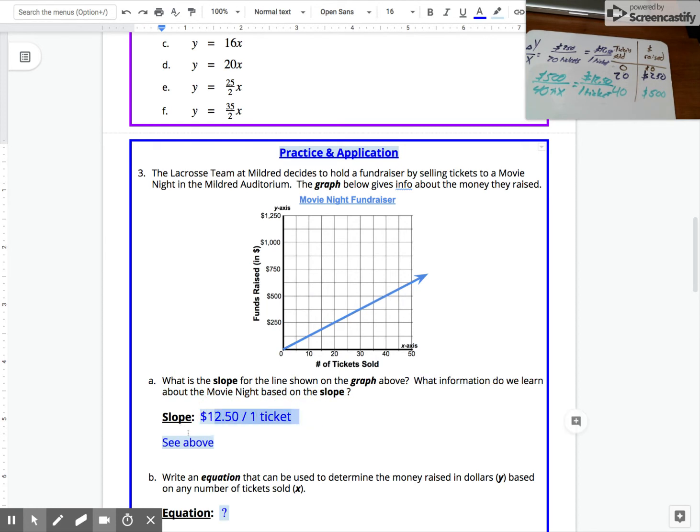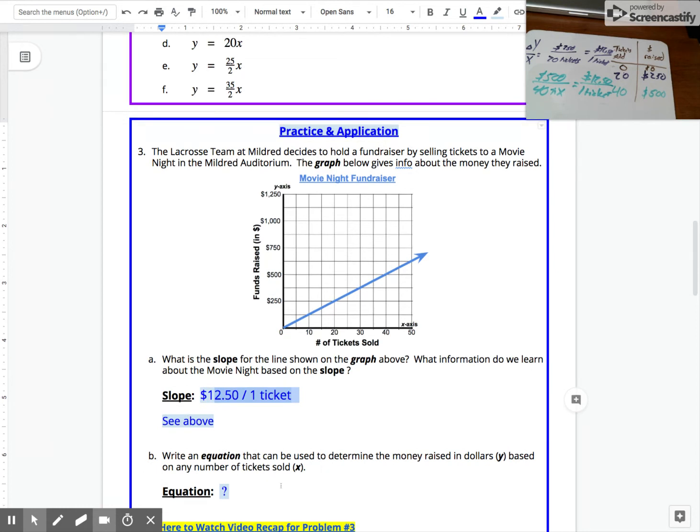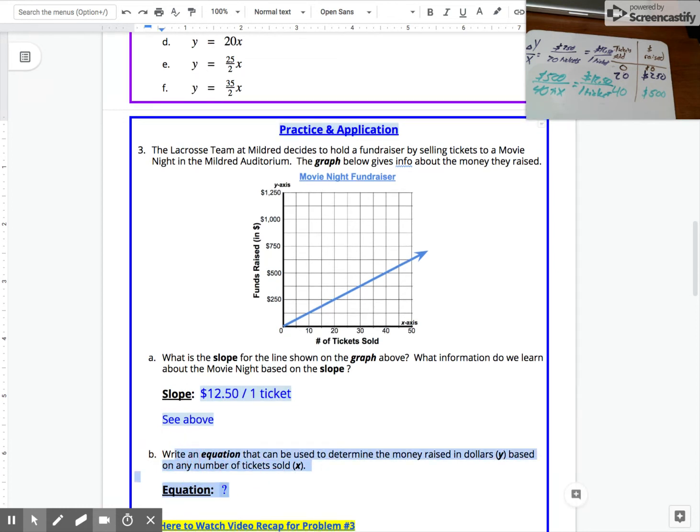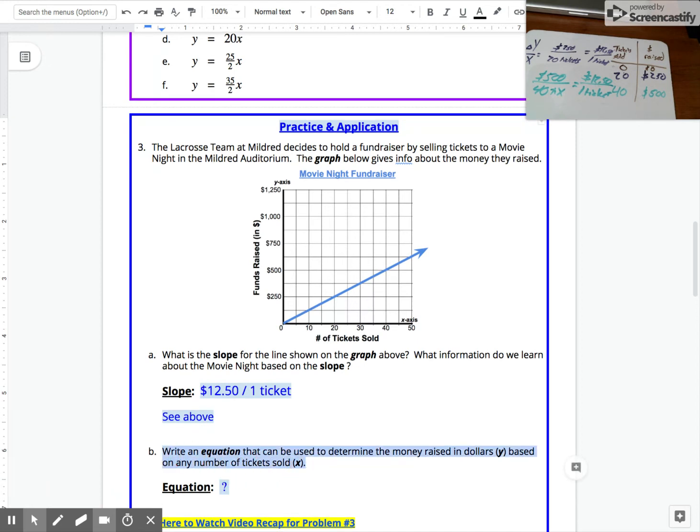Part B asks us to write an equation that can be used to determine the money raised in dollars. We're going to use y for our money raised based on the number of tickets sold, or x. Here we're not going to be specifically saying how many tickets were sold or how much money was fundraised. We just want to come up with an equation that could be used to determine either of those variables once we know one of them.